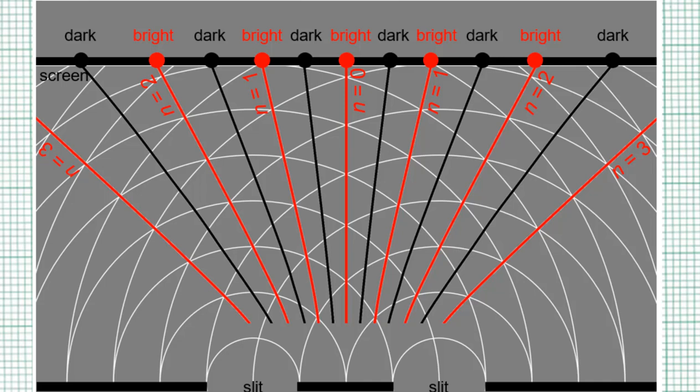In the ripple tank, you can see the interference pattern formed here. All the nodal lines and anti-nodal lines. Not for the double slit. For the double slit, you have to place a screen here and you see the interference pattern only on the screen. You don't see bright and dark fringes in the space between the slits and the screen.